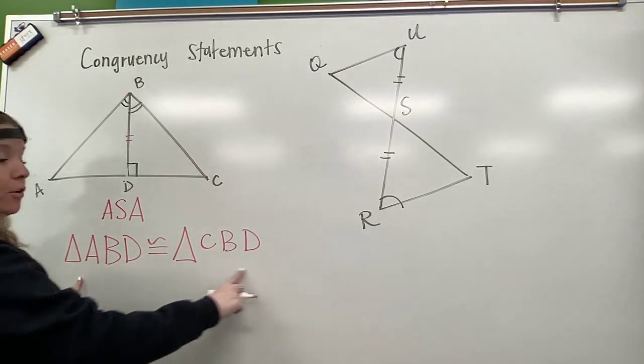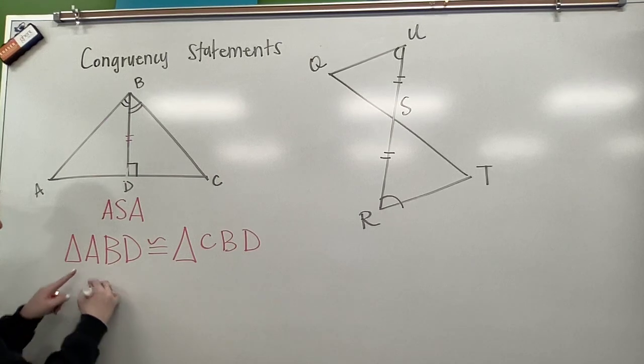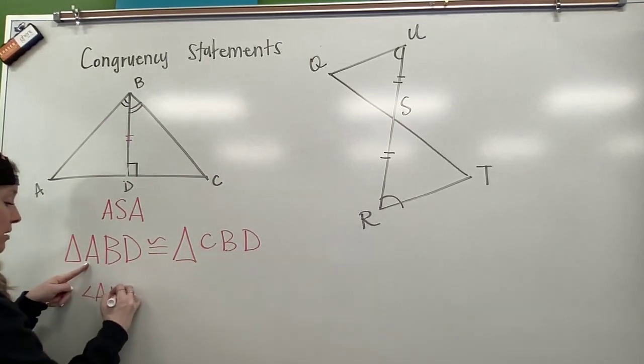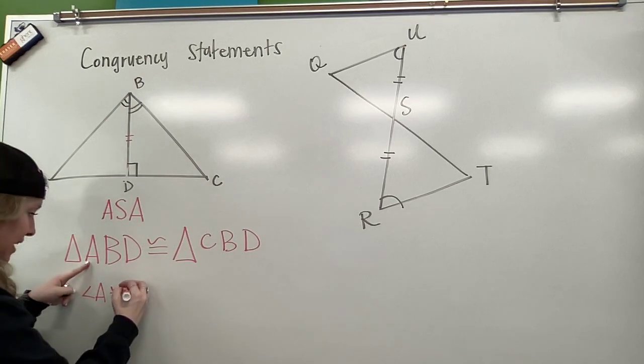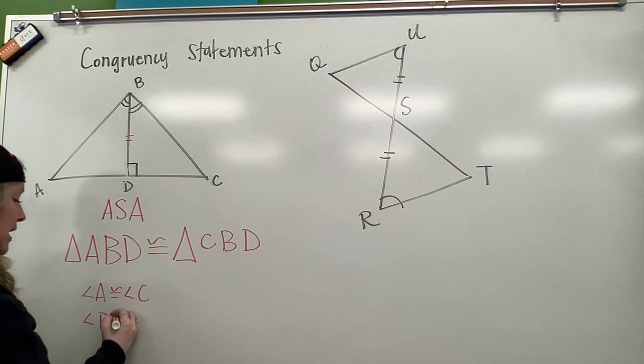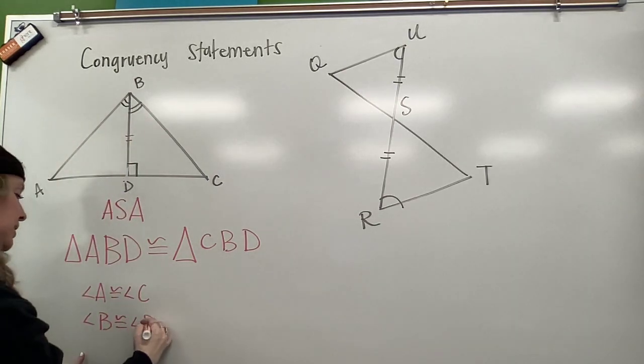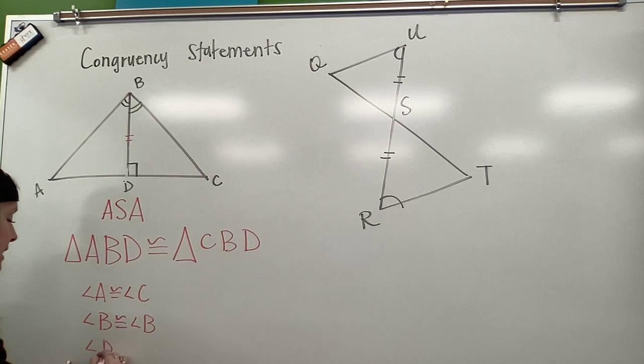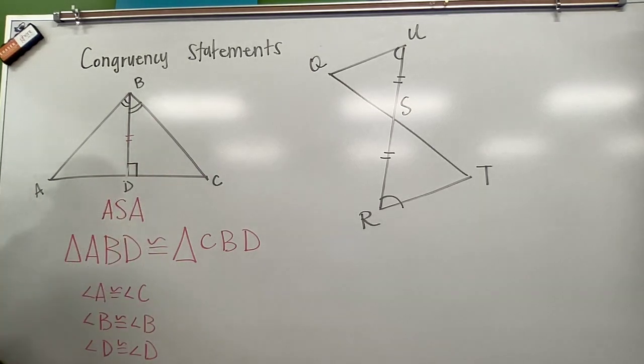What this congruency statement is telling me is angle A is congruent to angle C. Angle B is congruent to angle B, which we can see on our diagram up there. And angle D is congruent to angle D. These are both 90 degrees, so that would make sense.